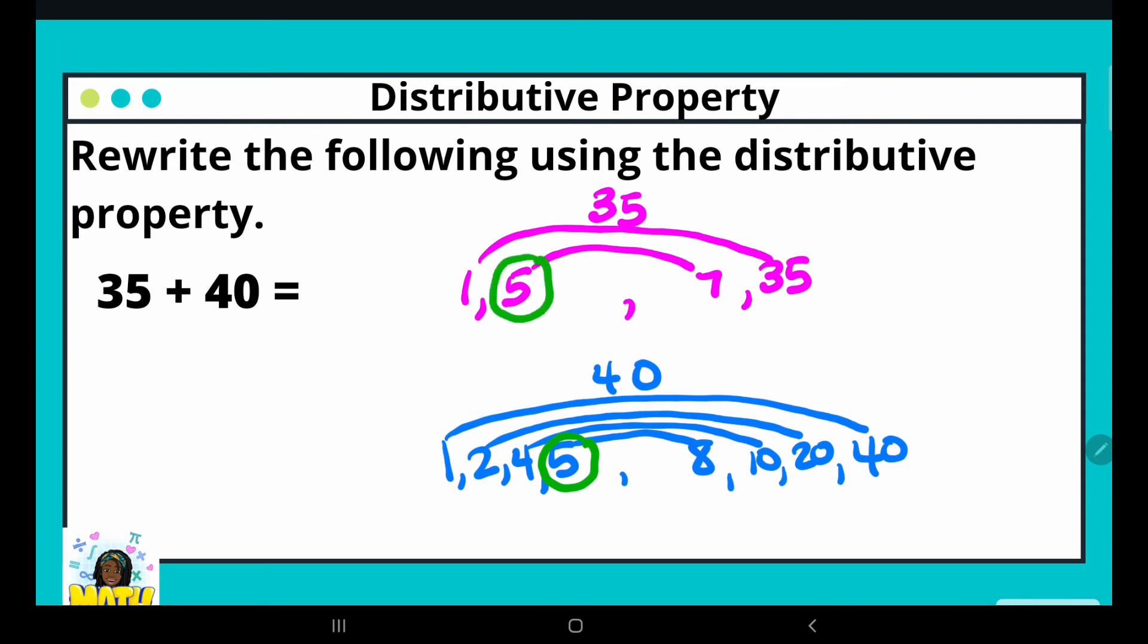I want to pay attention to that factor pair because I'm going to need those numbers as well. I'm going to factor out the number 5 and that goes outside my parentheses. 35 divided by 5 is 7, 40 divided by 5 is 8. So 35 plus 40 written using distributive property is 5 times the sum of 7 plus 8, or 5 parentheses 7 plus 8 closed parentheses.